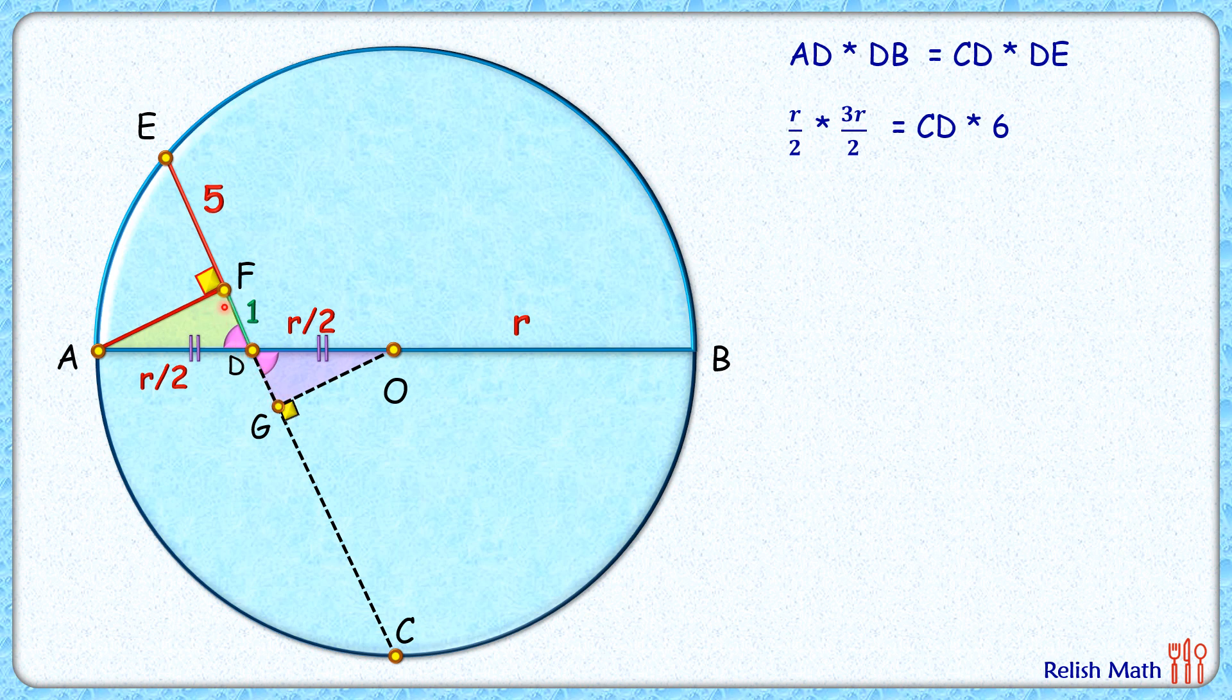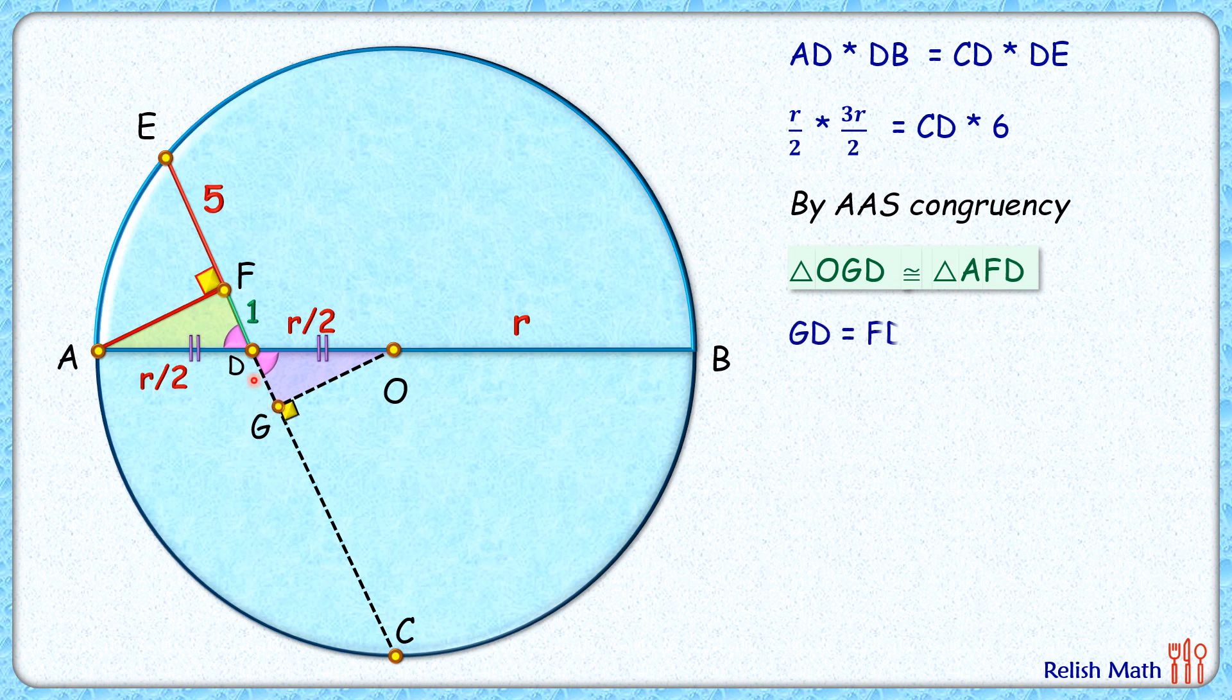So we can say that by angle-angle-side congruency, both triangles are congruent. That is, triangle OGD is congruent to triangle AFD. Now as the triangles are congruent, the corresponding parts will be equal, or we can say that GD length will be equal to FD length. But FD length is given as 1 centimeter, so GD length will also be 1 centimeter.